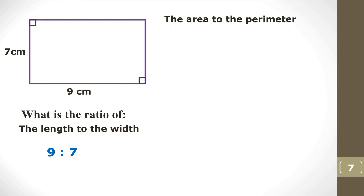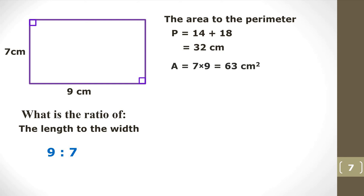What is the ratio of the area to the perimeter? First find the perimeter: 2 lots of 7 plus 2 lots of 9, which is 14 plus 18, giving a perimeter of 32 centimeters. Then the area is length times width: 9 times 7 equals 63 centimeters squared. Therefore the ratio of area to perimeter is 63 to 32.